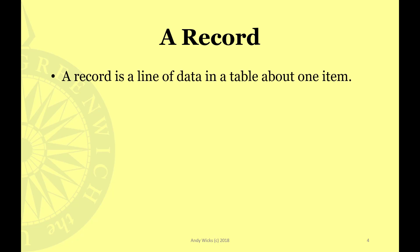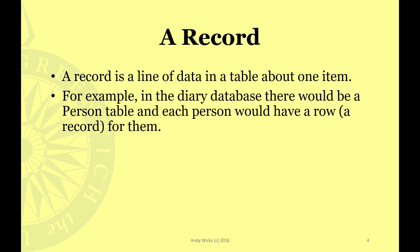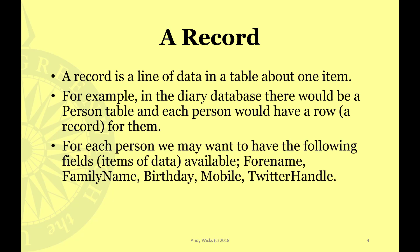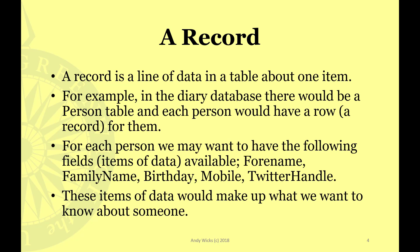A record is a line of data in a table about one item. For example, in the diary database we just hypothesised about, there would be a person table and each person would have a row — a record just for them. For each person we may want to have the following fields — pieces of information: forename, family name, birthday, mobile, and Twitter handle. These items of data would make up what we want to know about someone.